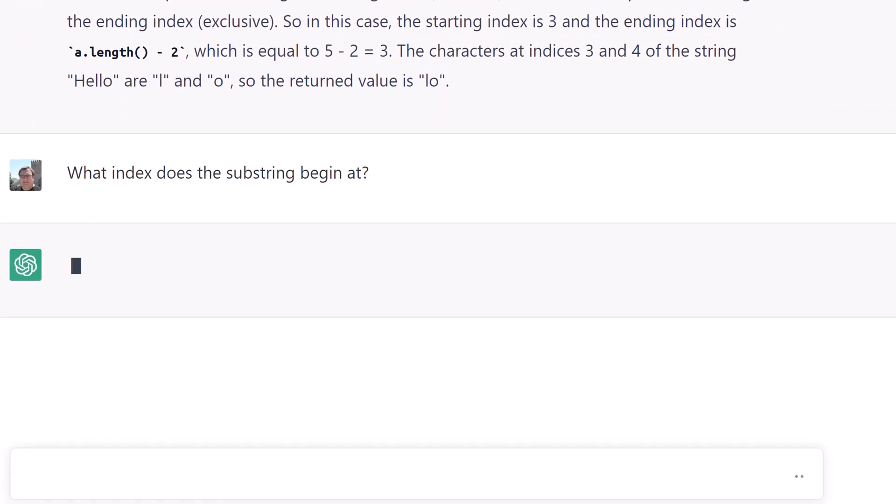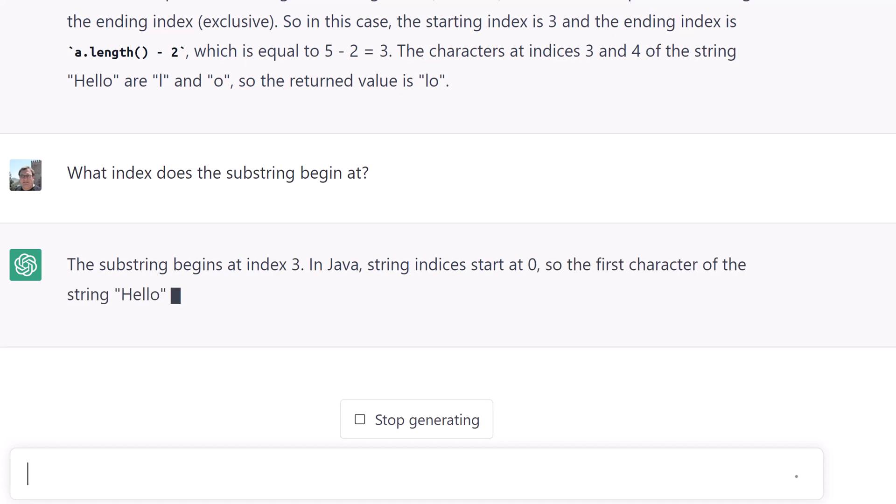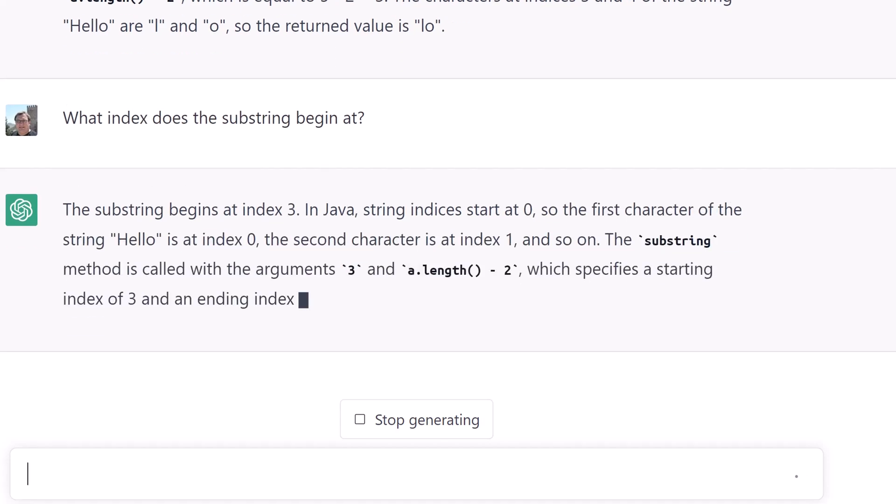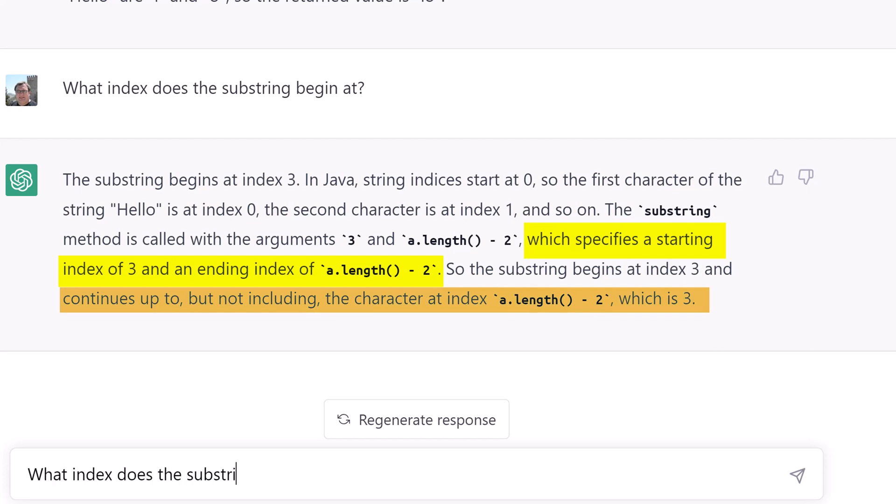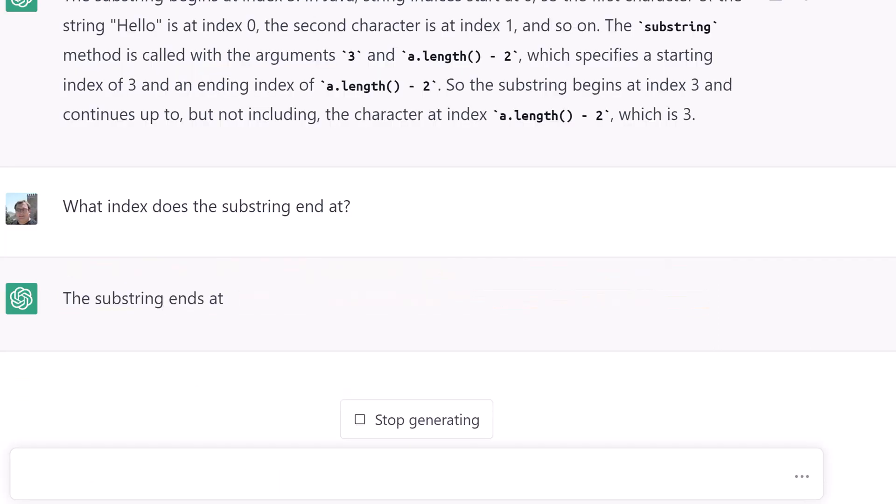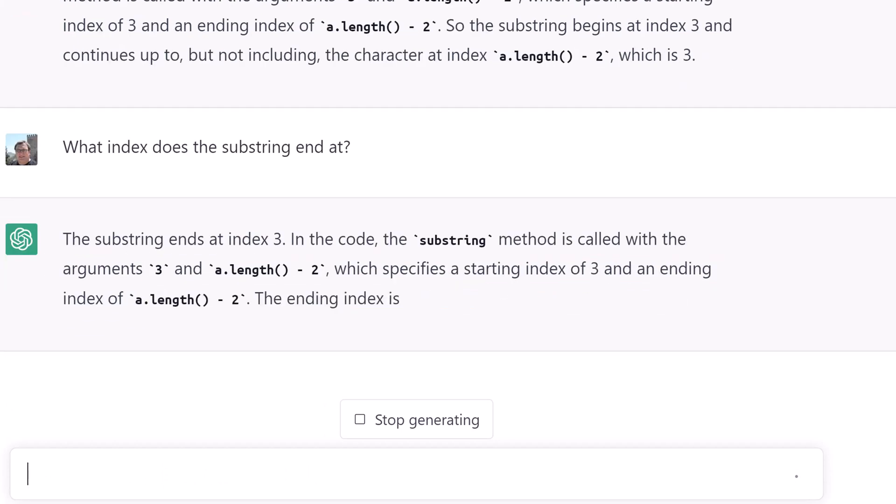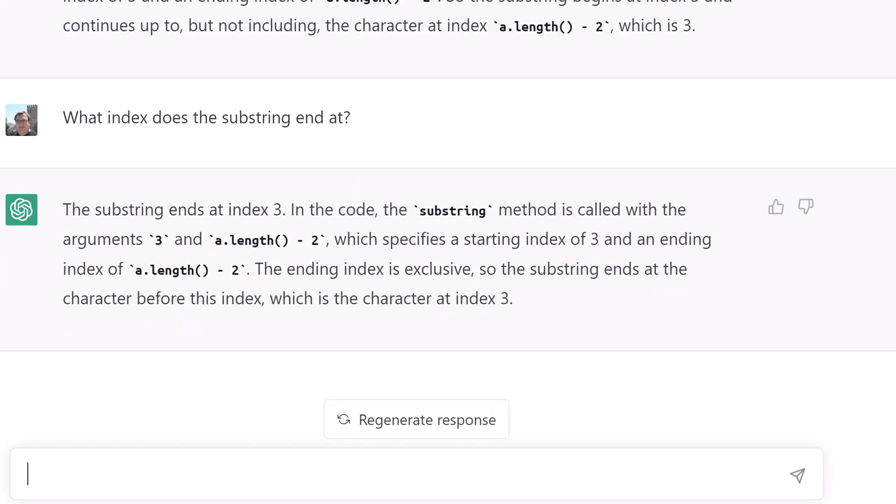Let's clarify the starting index with ChatGPT. Okay, ChatGPT gets that it starts at 3 and it volunteered that it also ends at 3. Let's ask where the substring ends. Basically, the same answer. In both cases, it correctly stated that the second number is exclusive.